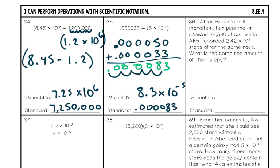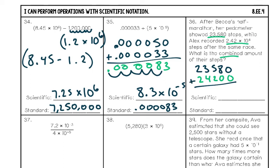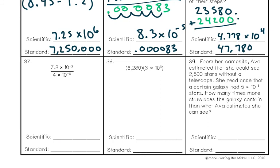Number thirty-six: after Becca's half marathon her pedometer showed 23,580 steps, while Alex recorded 2.42 times 10 to the fourth steps. 'Combined' means add. Rewrite 2.42 times 10 to the fourth in standard form, then add both numbers straight down along the decimal. After adding, convert back to scientific notation by moving the decimal back between the first two digits and counting four places. That's the final answer.